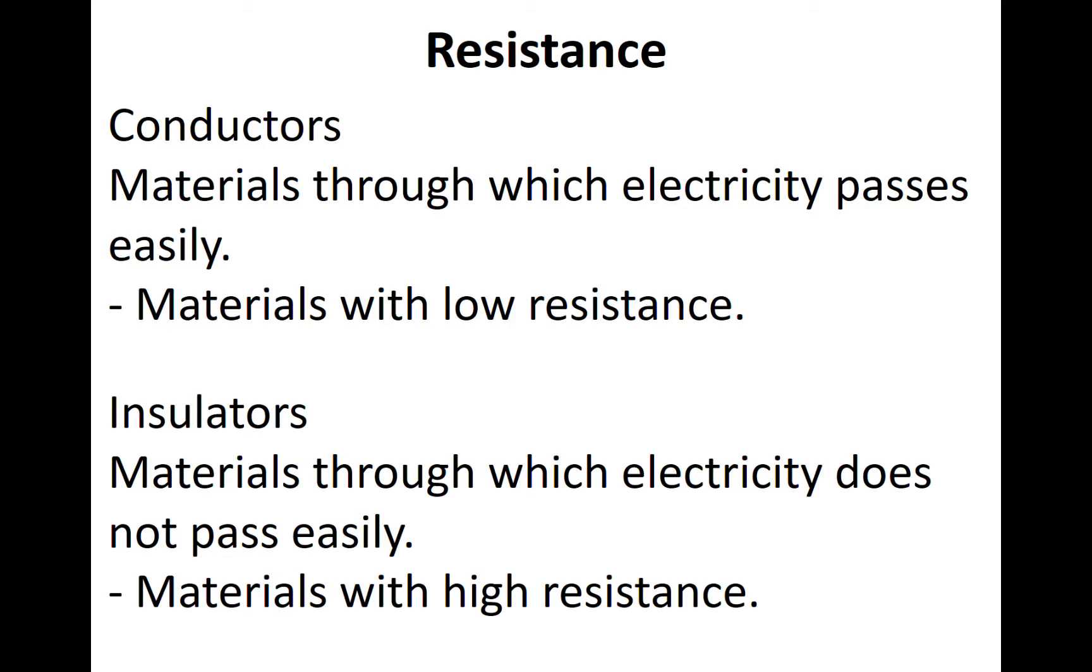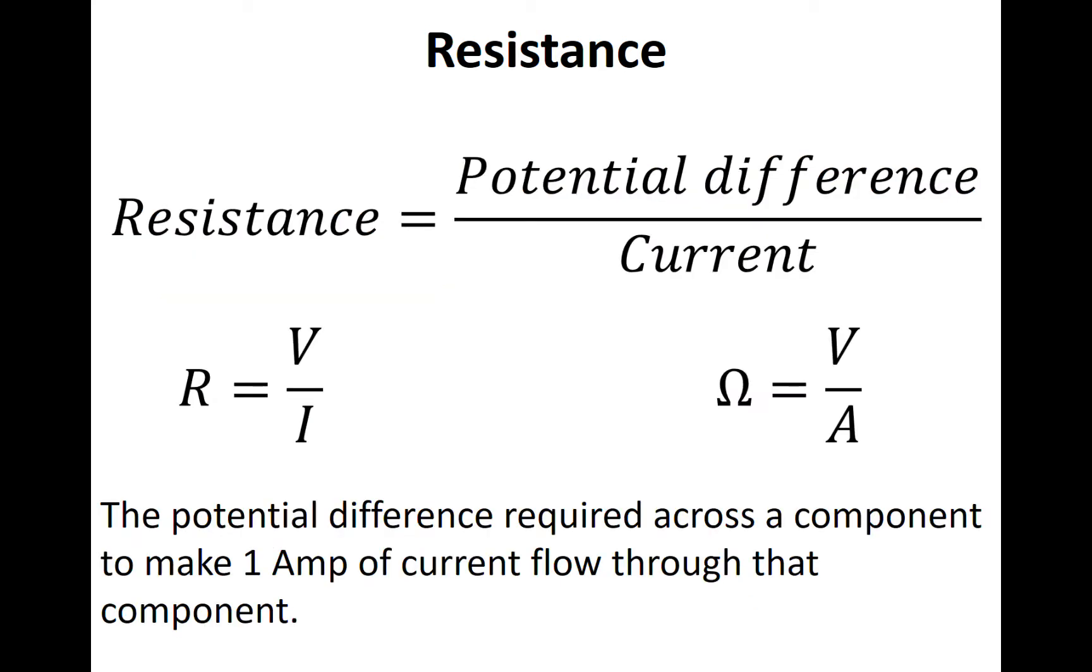Resistance is defined as the potential difference per unit current. So the potential difference required across a component to make one amp of current flow through that component. We can shorten the equation to R equals V over I, where R is resistance, V is potential difference, and I is current.